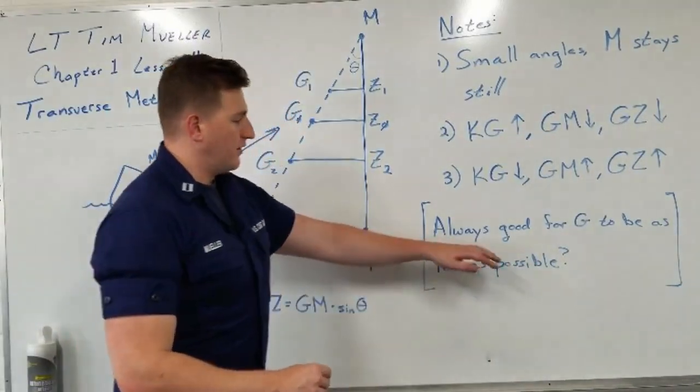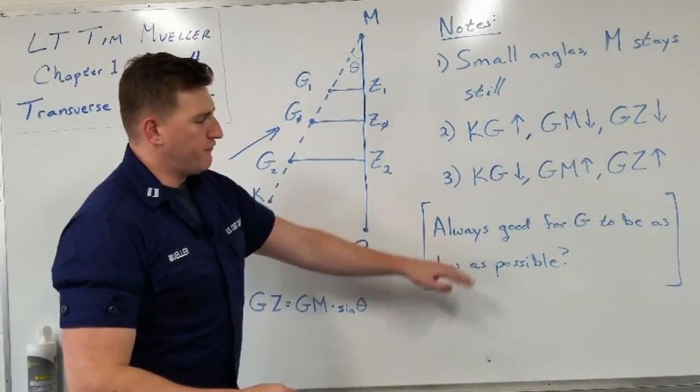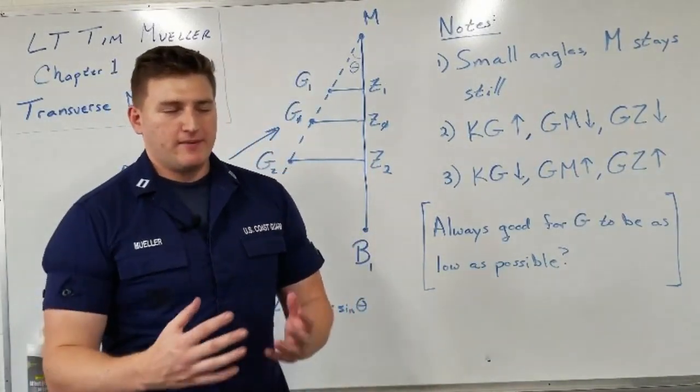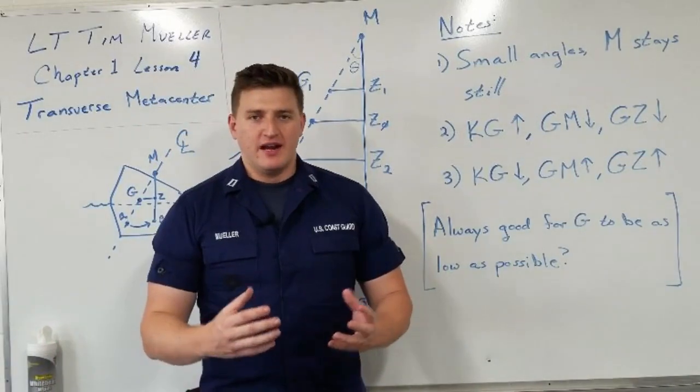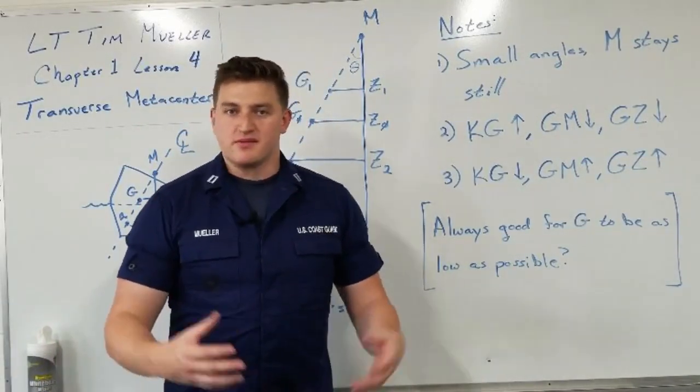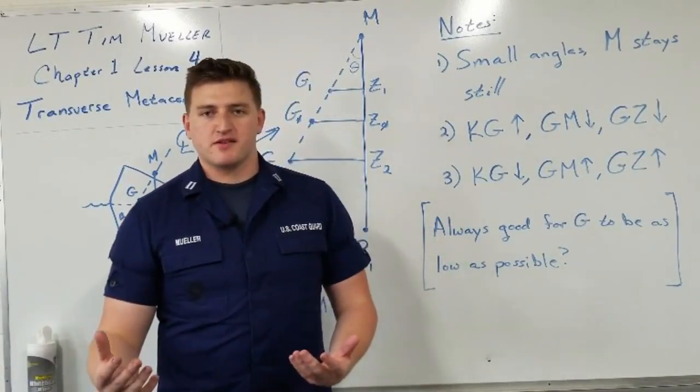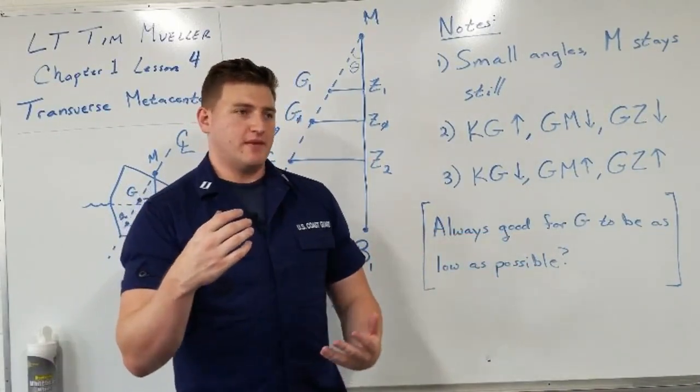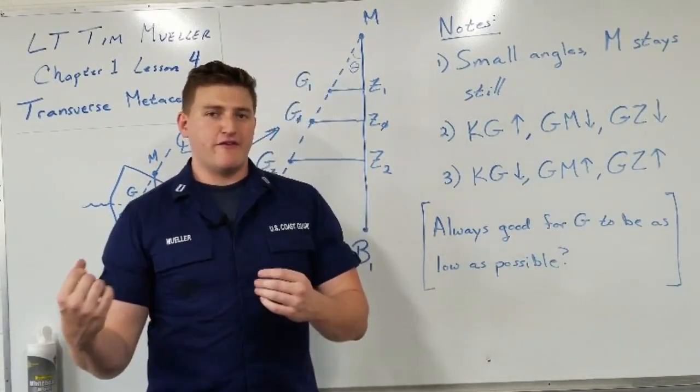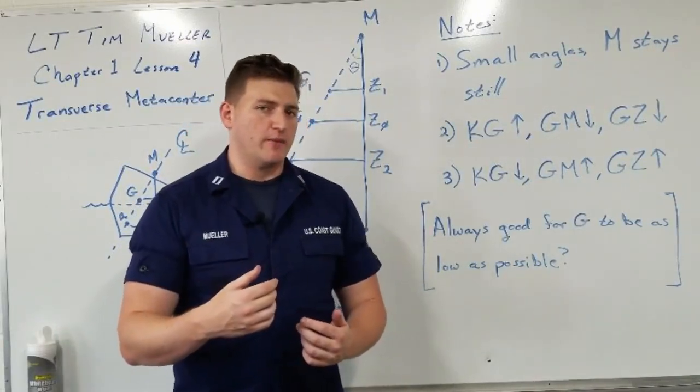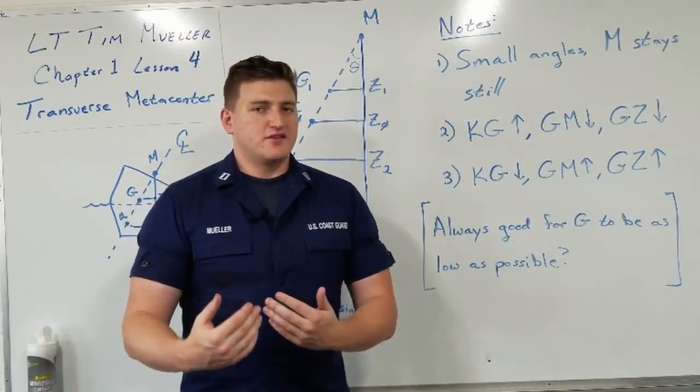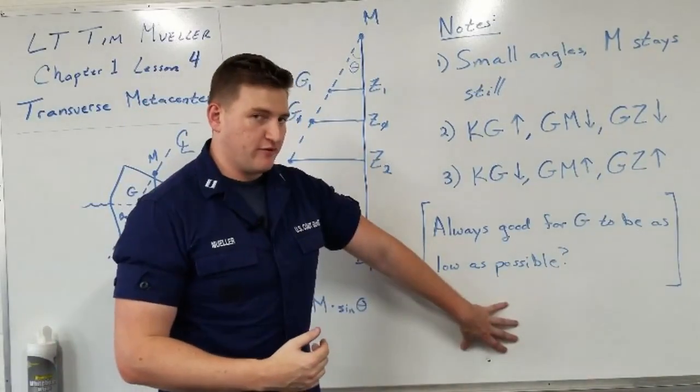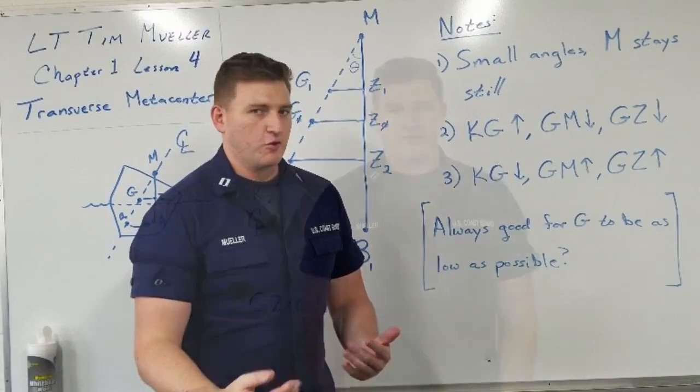Here's a quick little thing for you to ponder. Is it always good for G to be as low as you can possibly make it? Think about the different kind of ships that are out there. Some are very small ships, some are extremely large ships, like cruise ships. If you have a very tall ship and it's whipping all around, if you have a very, very strong righting moment, is that going to cause any undue stresses on the very top of the superstructure? Is it going to be very comfortable for people to ride in? Think about it real quick.